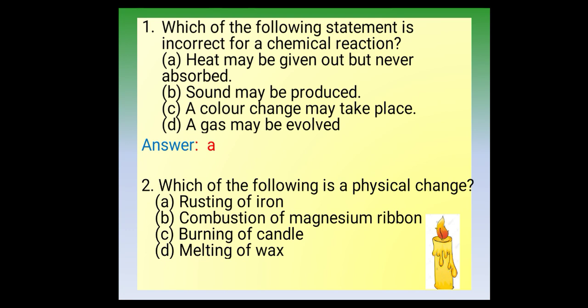The second question: which of the following is an example of a physical change? Options: rusting of iron, combustion of magnesium ribbon, burning of candle, or melting of wax. Rusting of iron is an example of a chemical change — iron reacts with oxygen and moisture to form a brownish layer of rust. Combustion of magnesium ribbon produces ashes that are different from the ribbon — a newly formed substance — so it is also a chemical change. Burning of candle is also an example of a chemical change.